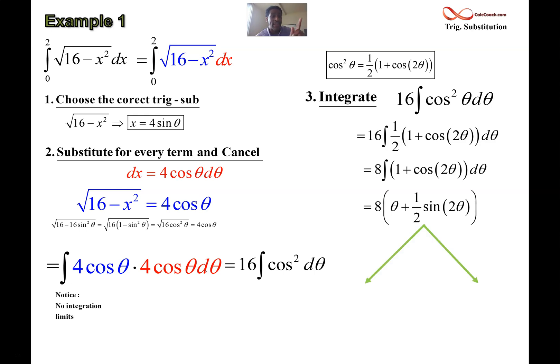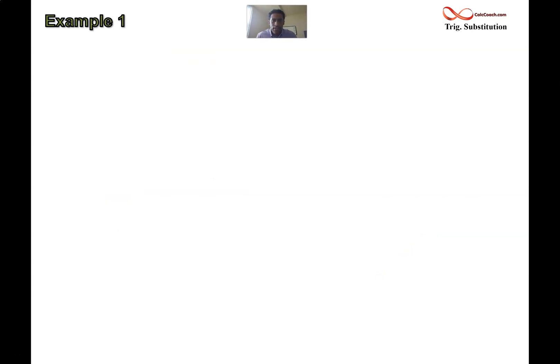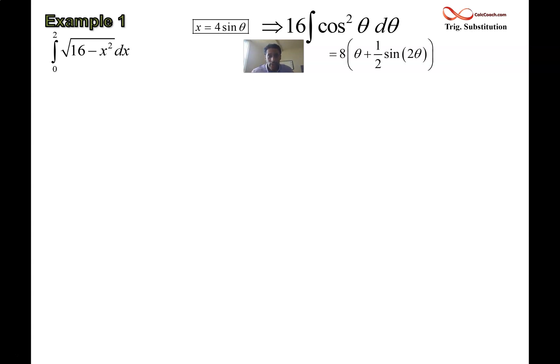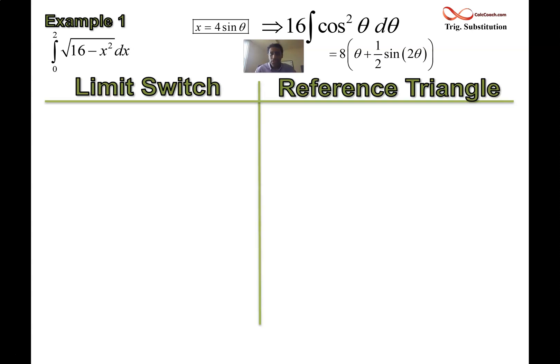So we brought in trig so that we could integrate, and now we've integrated. We have this function here who is the antiderivative, but it's in the wrong variable. So we have two choices here. This was a definite integral to start out with. We could take these x numbers 0 and 2 and convert them into theta numbers, or we could abandon that and go with the reference triangle. On the next slide I'll do both approaches. Now, for one particular problem you only pick one approach. Don't do them both. But just know that if your integral is indefinite to start out with, if there are no bounds of integration, then you have no choice but to do the reference triangle.